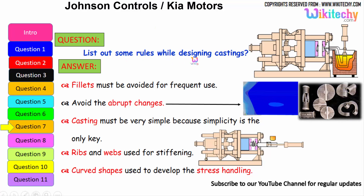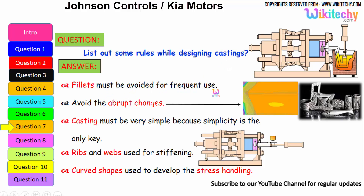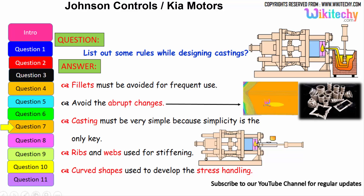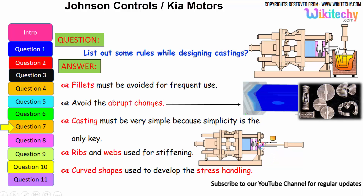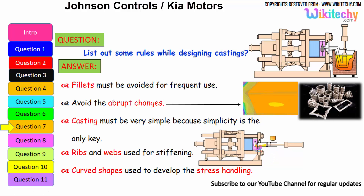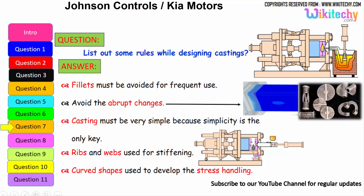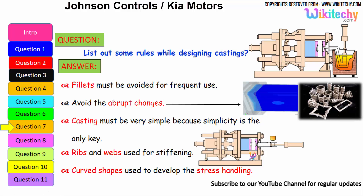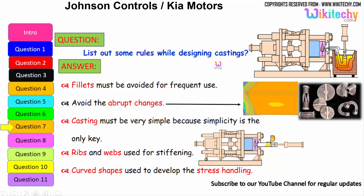Let us see some rules for designing castings. Fillets must be avoided for frequent use — that is the first rule. Avoid abrupt changes in section. Castings must be kept very simple, because simplicity is the key. Ribs and webs are used for stiffening. Curved shapes should be used to handle stress distribution. These are the rules to follow for castings.